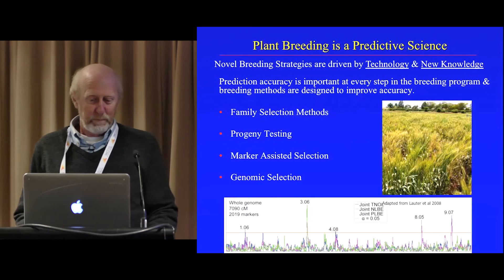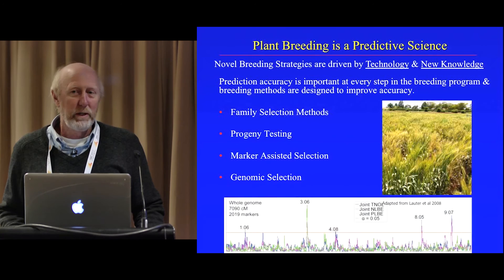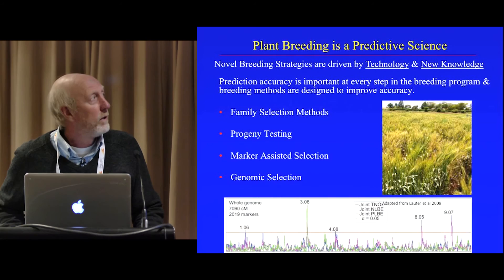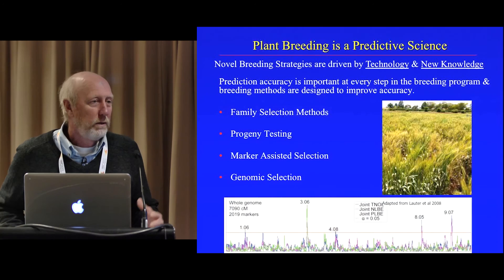Plant breeding is a predictive science. Everything we do in plant breeding is trying to predict something. New breeding strategies are driven by new technologies and new knowledge. So when we have new tools, we develop new strategies.